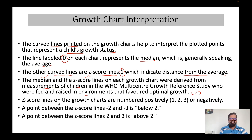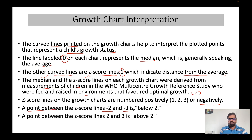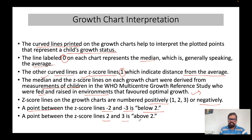On the growth chart, the z-score lines are numbered positively — one, two, three — or negatively — minus one, minus two, minus three. For example, if a plotting point falls between minus two and minus three z-score lines, it means below two. If the point falls between plus two and plus three z-score lines, it is above two.